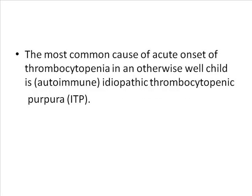In ITP, the child will be healthy, then suddenly they will present with acute onset of ecchymotic patches, petechiae, or any minor bleeds like epistaxis. The mother will clearly say the baby was absolutely normal until morning or yesterday evening, then suddenly she noticed some ecchymotic patches over the body. This is how they present with ITP. So you have to suspect ITP in any healthy child with sudden onset of rashes like petechiae or ecchymotic patches.